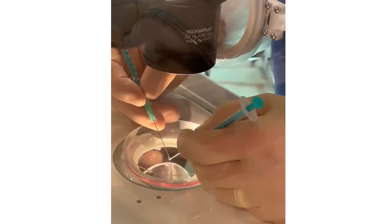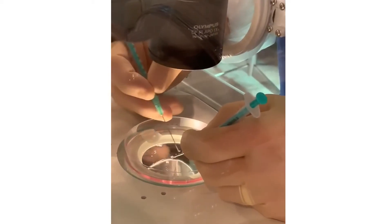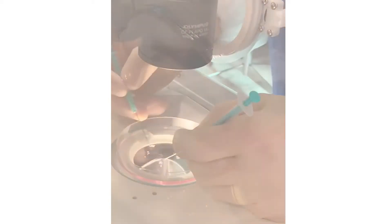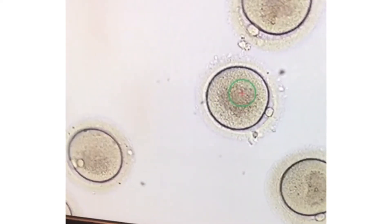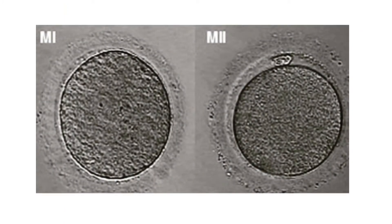This is what the eggs initially look like — the egg is surrounded by a cloud of cells called cumulus cells. The eggs will then be trimmed and stripped to remove the cumulus cells to assess the eggs for maturity. This is what trimming looks like. This is the final product after trimming and stripping where we can see how many mature eggs we have. Here you can see an immature egg versus a mature egg — the mature egg has extruded a polar body and has essentially gone through one of the meiotic divisions.